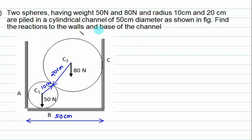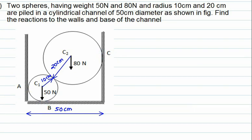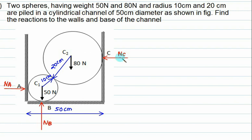We must find reactions at points A, C, and B. First identify the normal reactions, which are always perpendicular to the plane. There are three normal reactions: Na, Nb, and Nc. Cylinders C1 and C2 are in contact at point D, giving one contact reaction. We construct a right-angle triangle to find angle theta between the center-to-center line and the horizontal.